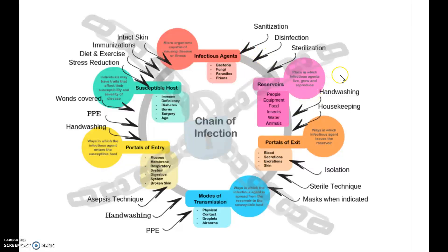But let's assume some of those microorganisms survive. They have to have somewhere to live — the place they live we refer to as a reservoir. They could be in people, animals. If you're in the office, the equipment, if you didn't clean it properly and you use it on another patient. Food — certainly there are foodborne illnesses, we hear about them all the time. Insects, and of course, the water supply.